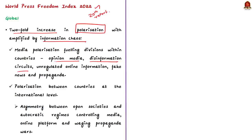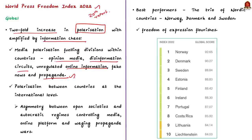At the international level, democracies are being weakened by the asymmetry between open societies and autocratic regimes that control their media and online platforms. These autocratic regimes are also waging propaganda wars against democracies. China is the best example as the world's most repressive autocratic regime — it uses its legislative arsenal to confine its population and cut it from the rest of the world. Social media access is quite regulated by the Chinese government.